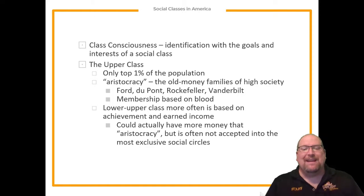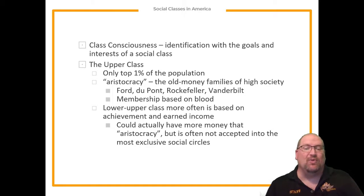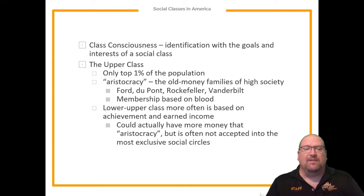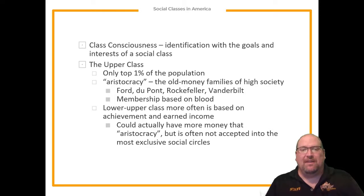Membership into the aristocracy is based on blood — you were born into the family. The second form of upper class is the lower upper class, more often based on achievement and earned income. These people could actually have more money than the aristocracy, but are not often accepted into the exclusive social circles of old money. Examples would be Jeff Bezos or Bill Gates — people who largely earned the money themselves. Even though Bill Gates is one of the richest men in the world, he's probably not considered part of the aristocracy.